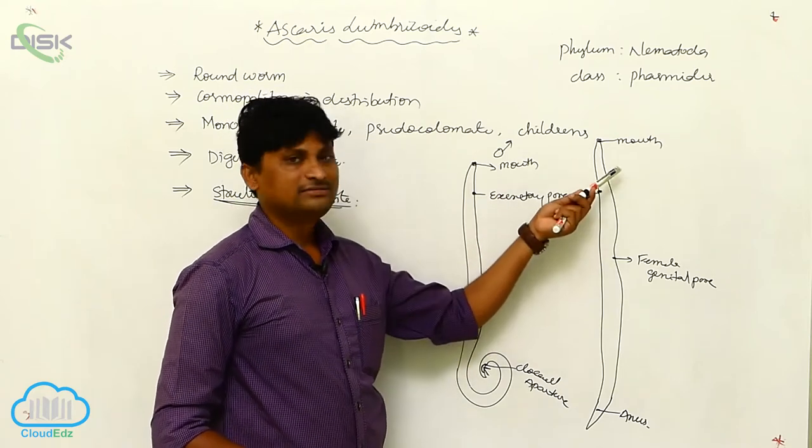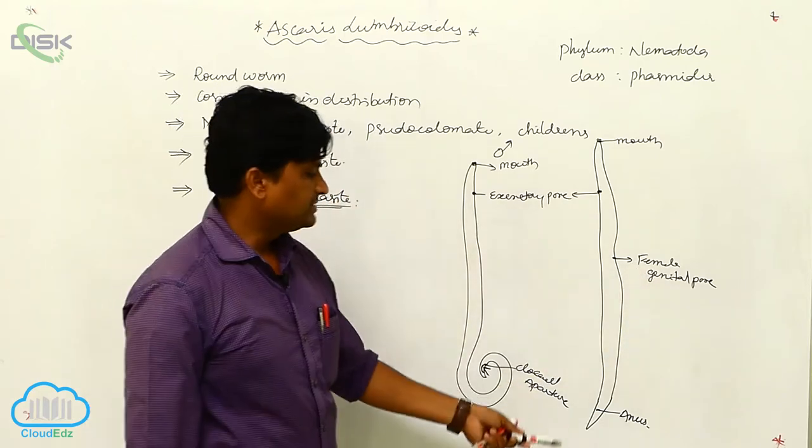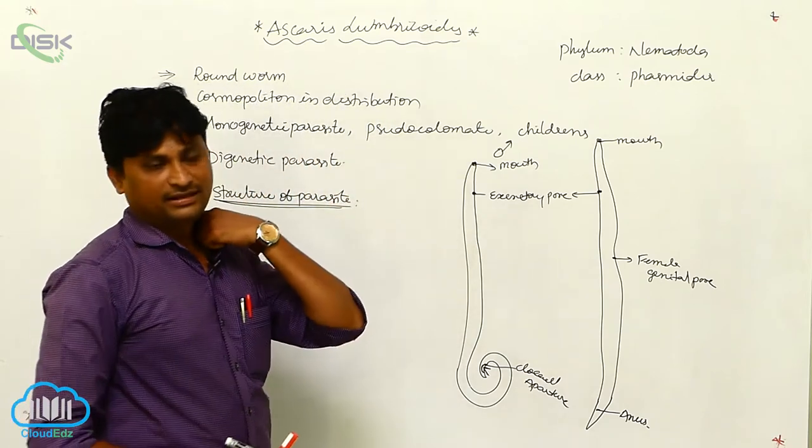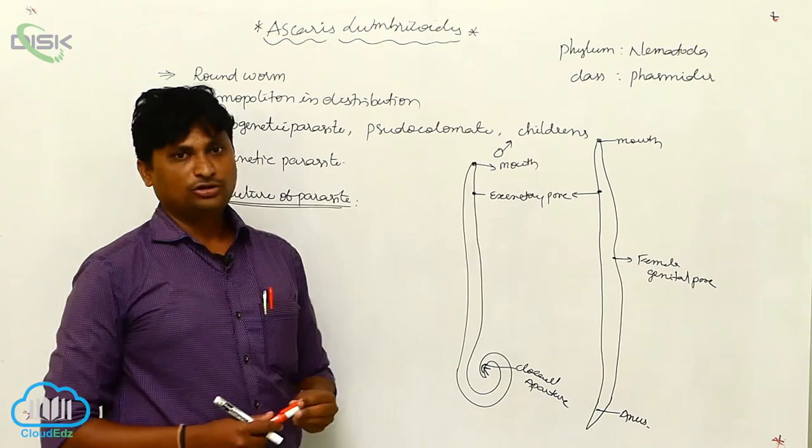At one third position of the body is the female genital pore, and just behind that is the anus. This is the structure of Ascaris Lumbricoides.